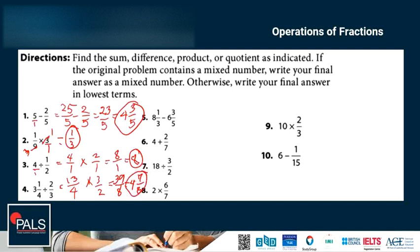Number 5. We can change it to improper fraction. So we have 8 times 3 is 24, 25. 25 over 3 minus 6 times 5 is 30, plus 3 is 33 over 5. The denominators are not the same, so we need to find the common denominator. The common denominator is 15.